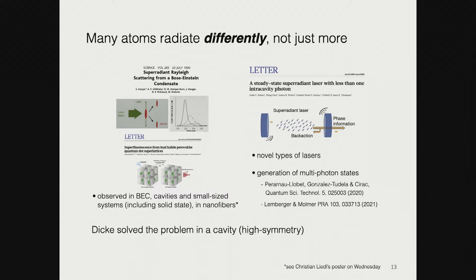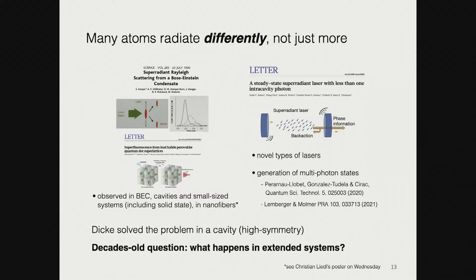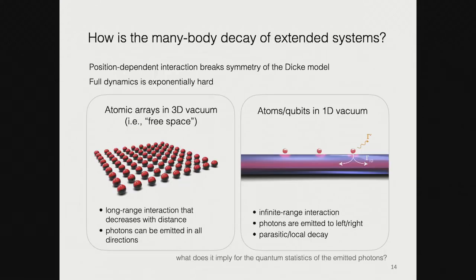Dicke solved this problem in a cavity, yielding a high degree of symmetry. The decade-old open question is: what happens when we break this symmetry and have an extended system? Is there superradiance to begin with? Today I'm talking about the many-body decay of extended systems where position-dependent interactions break the symmetry that enables an exact solution. If we try to do full dynamics, we don't have any constraint on the Hilbert space, so solving it exactly is exponentially hard.